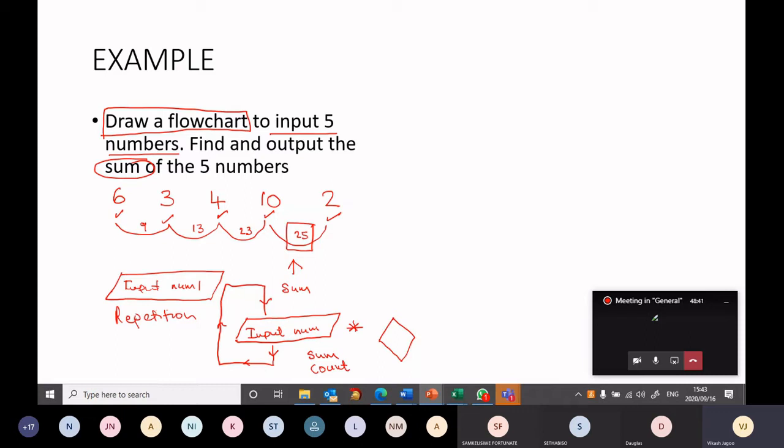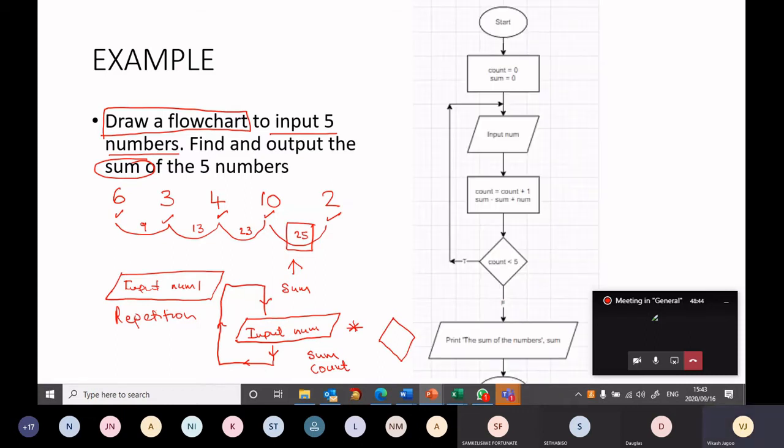So let's look at the solution. So here's a flowchart that will allow me to input five numbers and sum up the five numbers. So here we start. That's every flowchart. It has a start, and the end is cut off here, but there's a stop at the end of the flowchart.